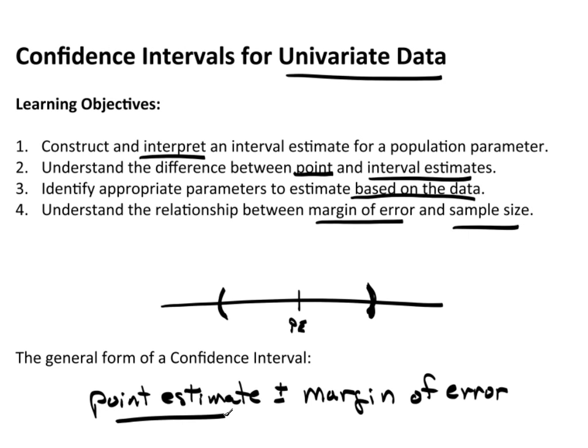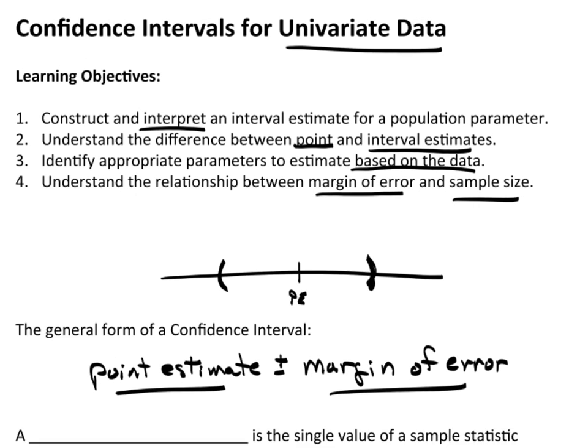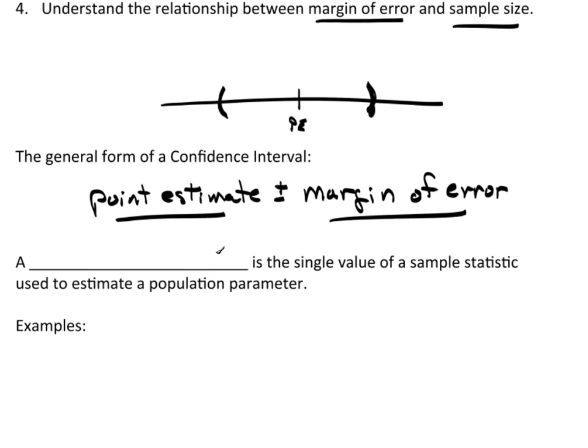So, keep this in mind. It's always going to have the form the point estimate, plus or minus the margin of error. So, what we need to do is define just what a point estimate is and then figure out what the margin of error is. Now, a point estimate is the single value of a sample statistic used to estimate a population parameter.